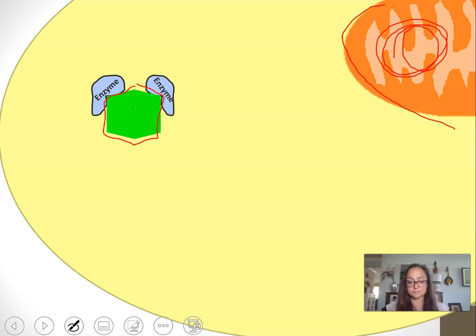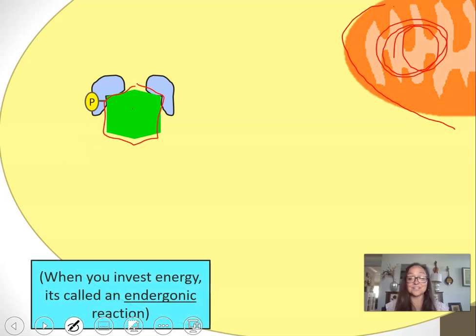Our first step, as I mentioned, is endergonic, which means it's going to be energy requiring. Here we have two ATP molecules that are actually going to attach some phosphates to our glucose. At this point we can no longer call it glucose because now it's a different molecule with two phosphates being attached. So our first step is endergonic, and now from this point on it'll be exergonic reactions.